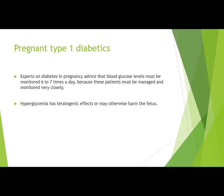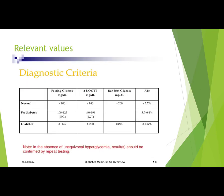For type 1 diabetics who become pregnant, experts advise monitoring blood glucose levels six to seven times a day. These patients must be managed and monitored very closely because hyperglycemia has a teratogenic effect and may harm the fetus. Because it can cross the placenta, we want to keep blood sugar levels low throughout the pregnancy.